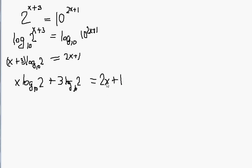Let me now bring the 2x on the left side and then this other term on the other side. So that gives me x times the logarithm of 2 base 10 minus 2x equals 1 minus 3 times the logarithm of 2 base 10.